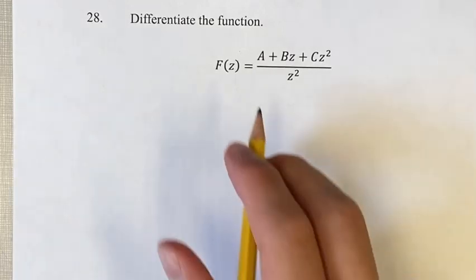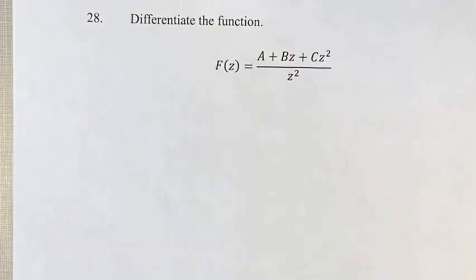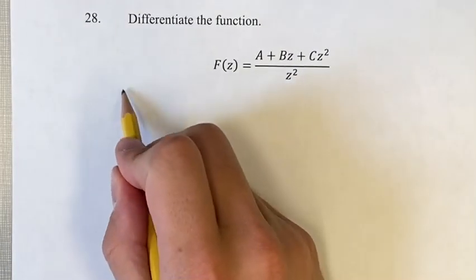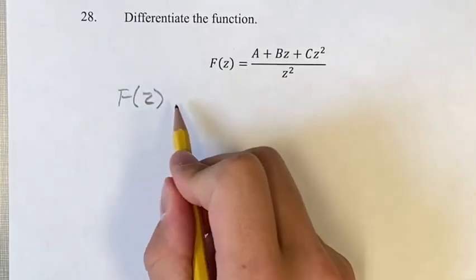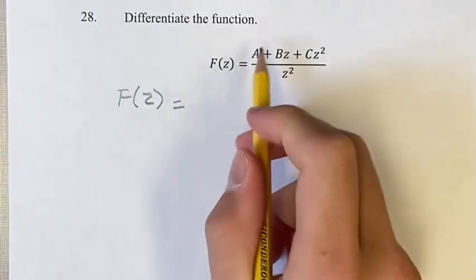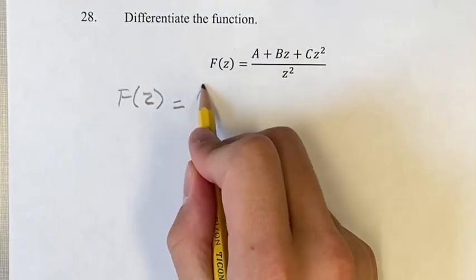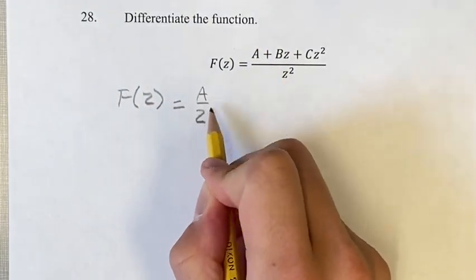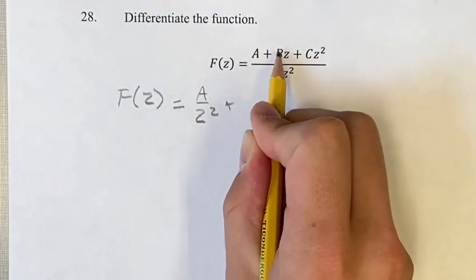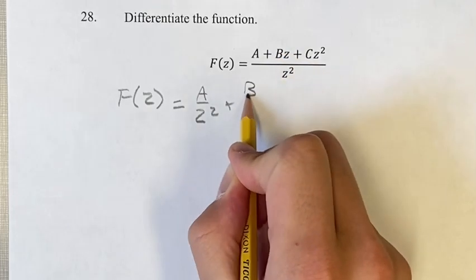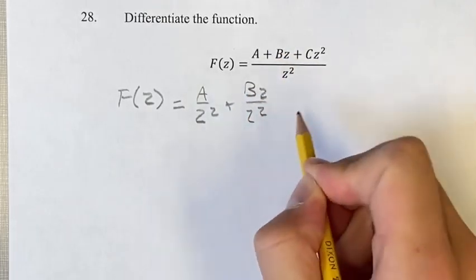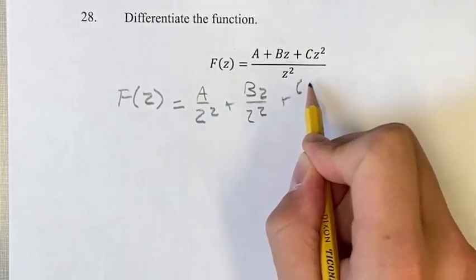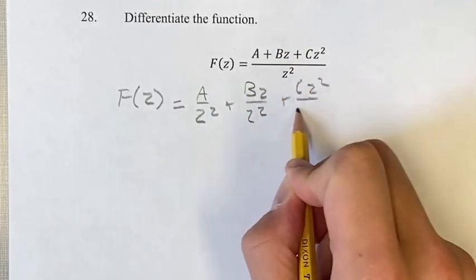What I want to do here is separate this into three separate fractions. So f of z equals a over z squared, plus bz over z squared, plus cz squared over z squared.